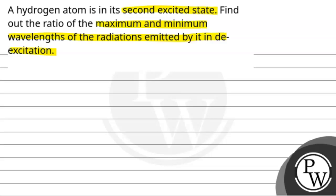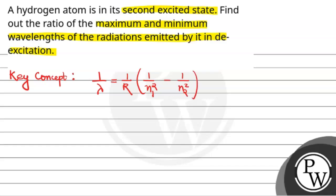The key concept here is that wavelength depends on the Rydberg formula: 1/λ = R × (1/n1² − 1/n2²). The second excited state means n = 3.